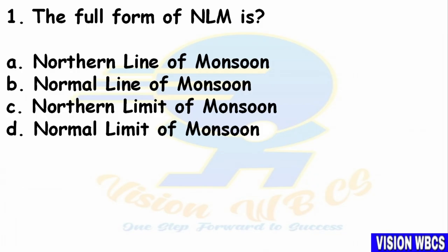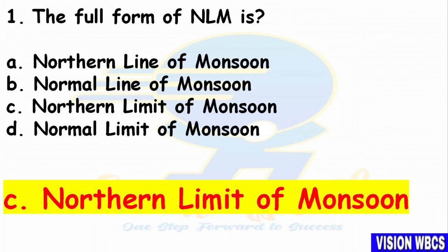First question: What is the full form of NLM? Option A — Northern Line of Monsoon. Option B — Normal Line of Monsoon. Option C — Northern Limit of Monsoon. Option D — Normal Limit of Monsoon. The right answer is Option C: Northern Limit of Monsoon.